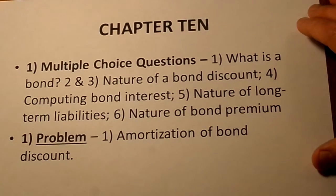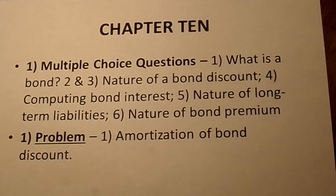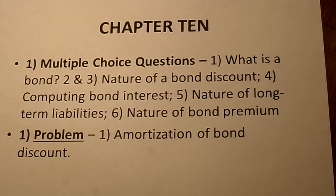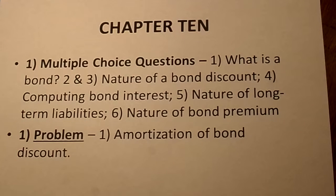Not quite as much from Chapter 10, but the chapter is still well represented. You'd have to know what a bond is — just the definition — and the nature of a bond discount. You'll see two multiple choice questions dealing with that. They could ask what's true of a bond discount; the answer is the bond sells below the actual amount that has to be repaid. Or it could ask what happens with a discount — the answer would be that you'd have to amortize it to bring the bond up to full value, the full amount that's going to be repaid. One of the multiple choice questions simply has you compute stated bond interest.